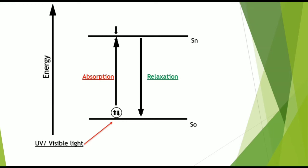When energy is supplied to an electron in the form of light, they absorb the energy and reach the excited state. In the excited state, the electrons are very unstable and hence they try to get back to the ground state. The process by which they absorb the energy and reach the excited state is known as absorption. And the process by which they get back to the ground state is known as relaxation.